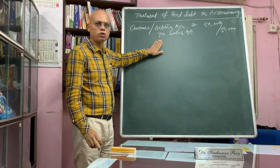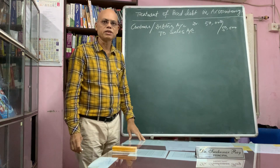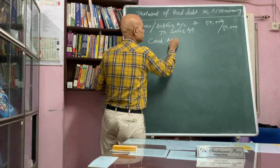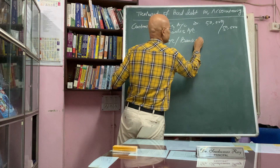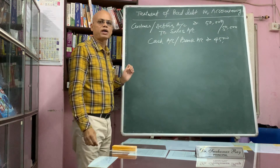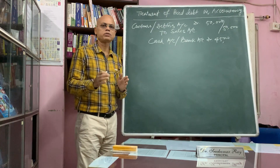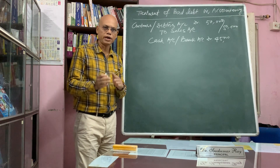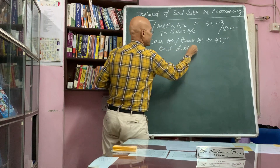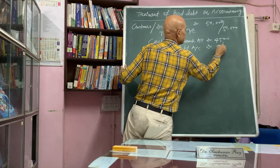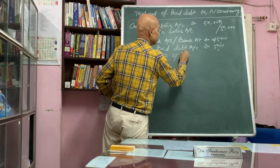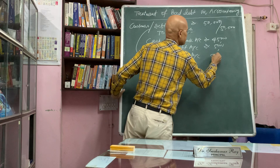When goods are sold on credit, it is very common in business that a portion is collected by cash — so cash account or bank account is debited. Suppose 45,000 is collected from the customer and 5,000 worth of goods sold on credit is not realized. In that case, bad debt account is debited 5,000 and debtors account is credited 5,000.